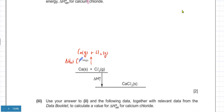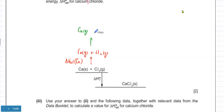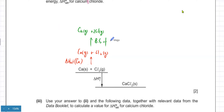That's ΔH atomization of Ca. The next step is that you break the chlorine–chlorine bond, and if you do that, chlorine atoms are formed. Calcium gaseous atoms are already formed; now you break the Cl–Cl bond to form two Cl gaseous atoms. That would be equal to the bond energy of the Cl–Cl bond, because that's what you're breaking — the Cl₂ molecule breaks into Cl atoms.